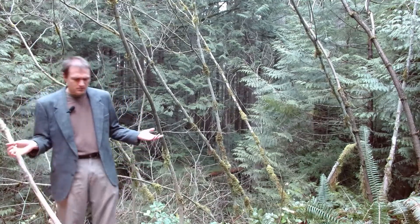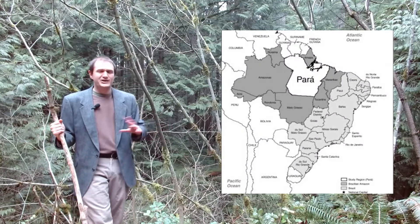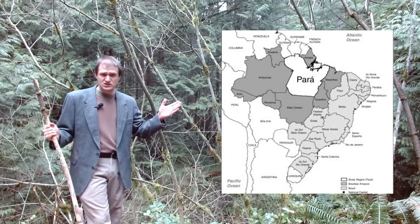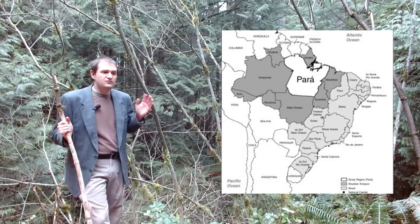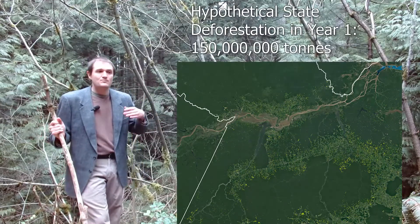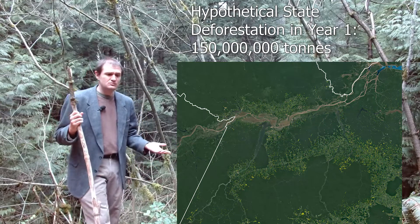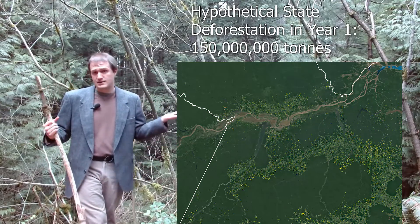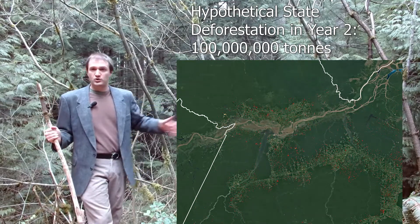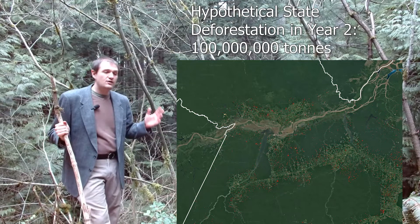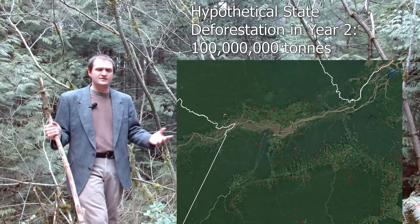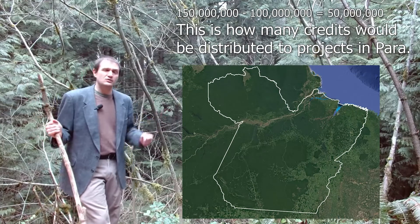So how do nested baselines actually work? The idea is that we look at an entire country or state and look at the deforestation rates every year. If the deforestation rates go down from one year to the next, we calculate how much carbon was preserved in that area. And we say this is because of the forest carbon projects in that state — therefore those forest carbon projects are going to be issued some amount of credits from that pool, from that difference.